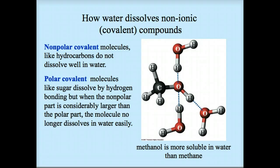Hydrogen bonding leads to increased solubility in water. For example, when table sugar — a sucrose molecule — is dissolved in water, it interacts with and becomes surrounded by water molecules. Sucrose molecules do not dissociate like ionic compounds. Covalent molecules remain intact when dissolved in water, but form hydrogen bonds with the water molecules.